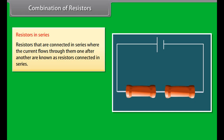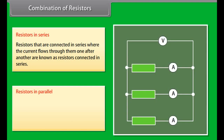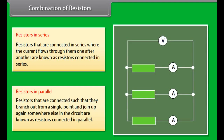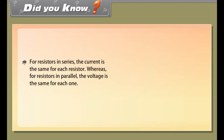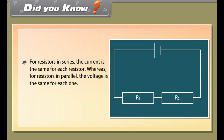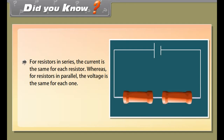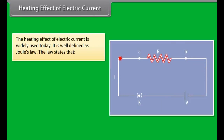Resistance of a system of resistors: A resistor is a passive two-terminal electrical component that represents electrical resistance as a circuit element. The current passing through a resistor is directly proportional to the voltage across its terminals. Thus, resistance is the ratio of the voltage applied across a resistor's terminals to the intensity of current through the circuit. Combinations of resistors are of two types: resistors in series and resistors in parallel.